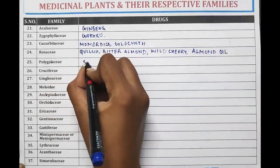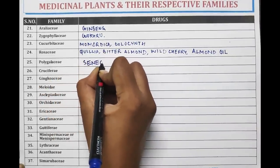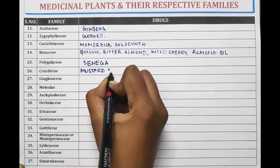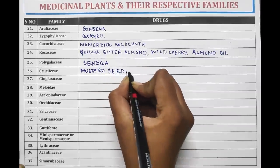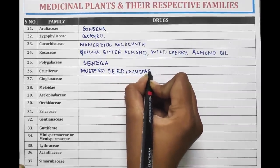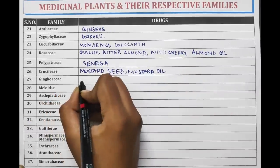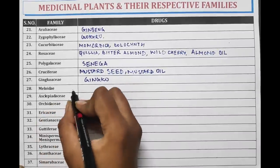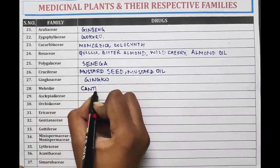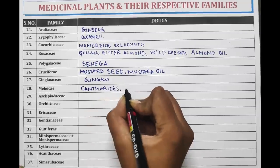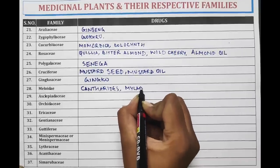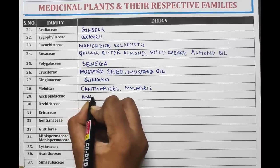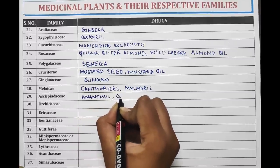Polygalaceae is the family of Senega. Cruciferae is the family of Mustard Seeds and Mustard Oil. Ginkgoaceae is the family of Ginkgo. Meloidae is the family of Cantharides and Mylabris. Asclepiadaceae is the family of Anantmool and Gudmar.